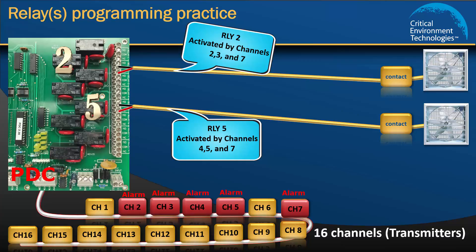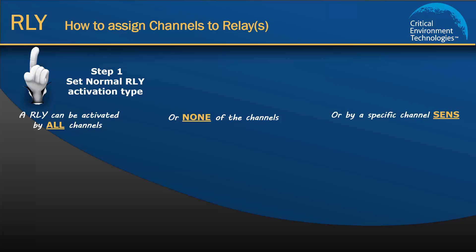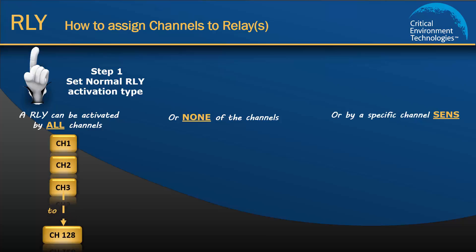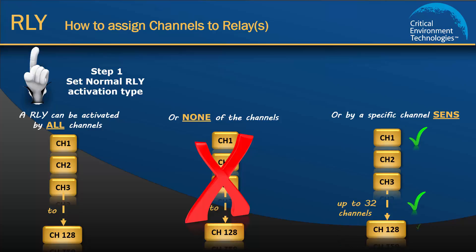First we need to assign a Relay Activation Type. There are 3 types of activation types: All, None, and Sends. A relay can be activated by all channels — this is the default setting from the factory. If None is assigned to a relay, that relay won't be activated by any channel unless a channel goes into Fail Mode, in which case by factory configuration all the relays will be activated. If Sends is assigned to a relay, that relay will be activated by the channel or channels assigned to it.